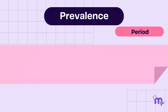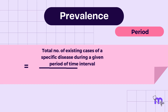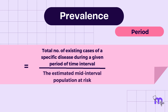Period prevalence, on the other hand, can be calculated as: Total number of existing cases of a specific disease during a given period of time interval, divided by the estimated mid-interval population at risk, multiplied by 100.